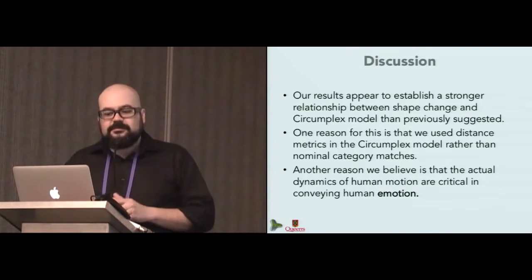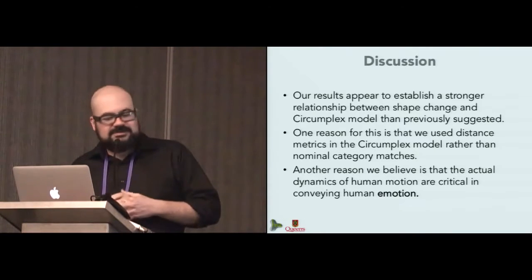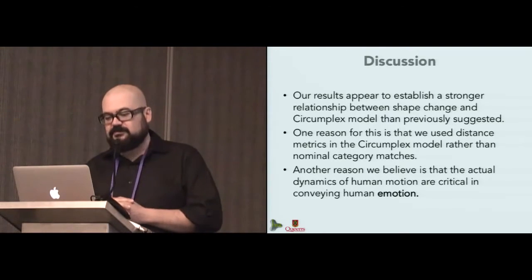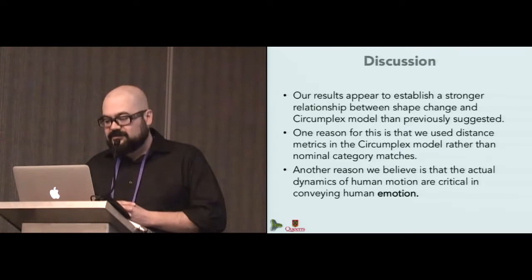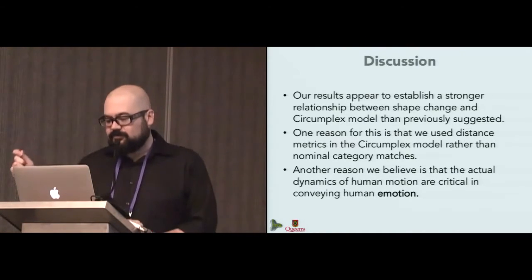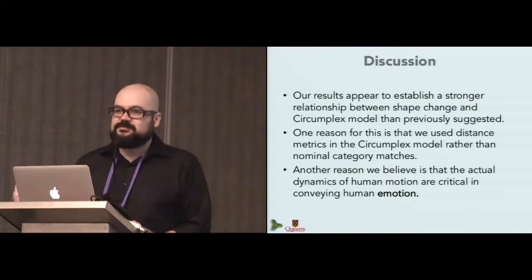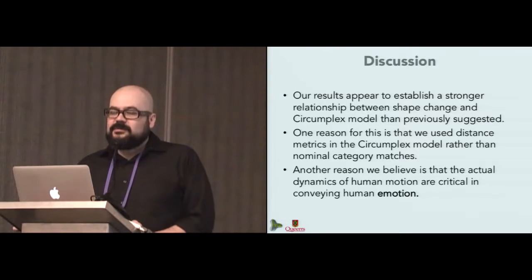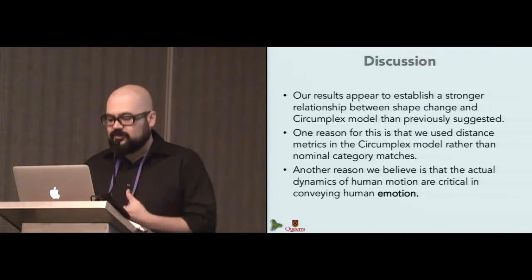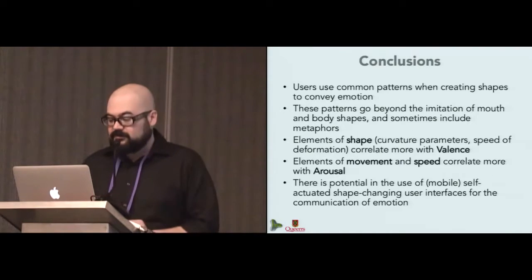So our results seem to establish a stronger relationship between the shape change and the emotions in the circumplex model than previously suggested, than previous work. One reason for this is that we use distance metrics in the circumplex model instead of just trying to pinpoint nominal categories, or to match nominal categories. And we think that this result was probably maybe better than in previous related work, because our shapes were animated by actual humans. Like it was not movement generated programmatically, but it was actual human expression behind the animations.